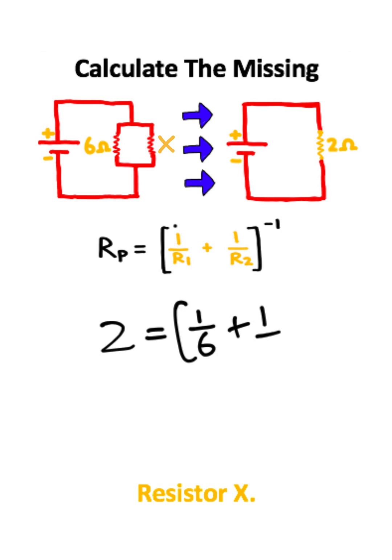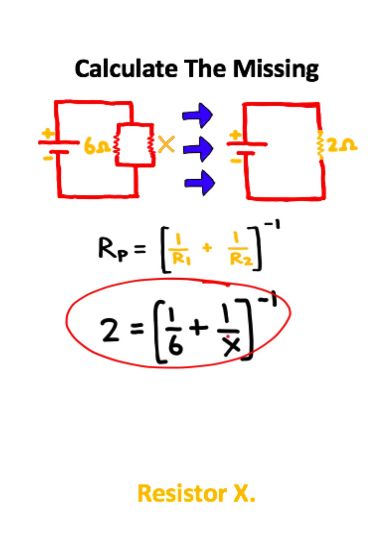We can add this to 1 over R2, which is going to be this X right here, the unknown resistor. So this is the setup to the equation, but notice in this equation we only have one missing variable, this X.